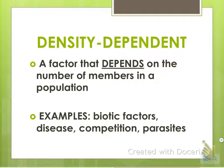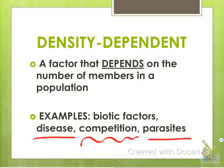Density dependent factors do depend on the number of members in a population. These include things like competition, disease, or parasites. For example, if you have a huge number of lynx and not many hares, there's going to be a change in the population because competition is affecting the density.